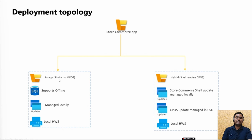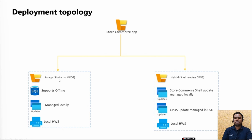If you want the Modern POS experience — where you install the point of sale locally, manage it, and support offline — you install in in-app mode. This in-app mode installation passes parameters; by default it is in-app version, but if you want offline mode you need to provide specific parameters. Everything is managed locally, so whenever you want to update the app you install the next version installer and run it. In-app mode supports offline and local hardware station.